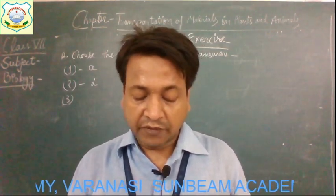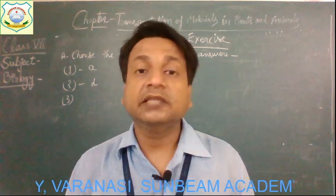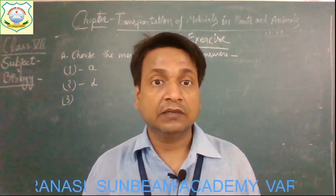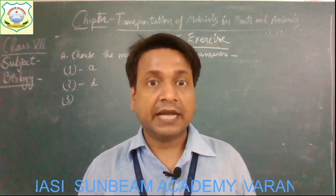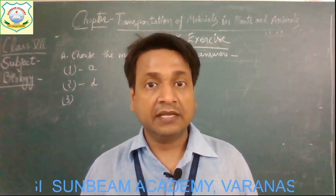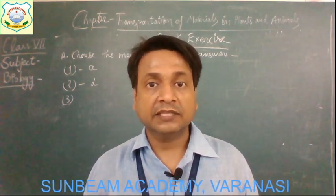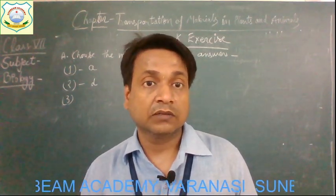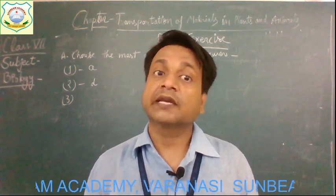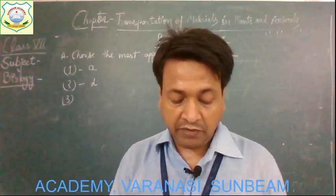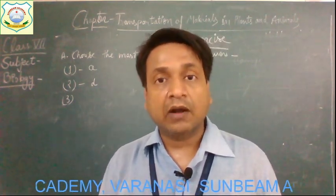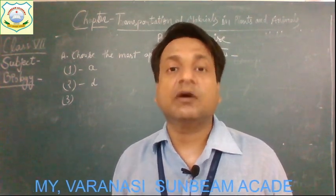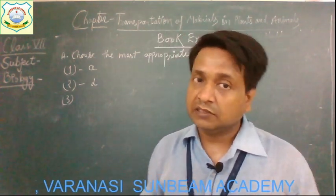Question number three: The thinnest blood vessel in the human body — there are three kinds of blood vessels: arteries, veins, and capillaries. The thinnest one is capillaries, so the correct answer is C.